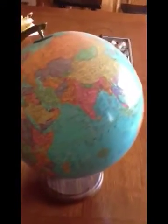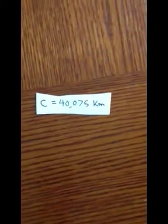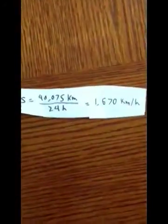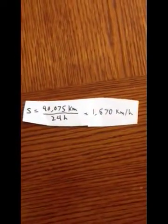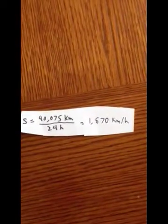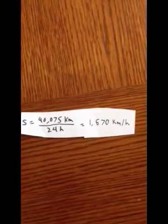Suppose you are traveling at the equator. The circumference of the equator is 40,075 kilometers and you have to travel around the equator in a one day period. So if you take 40,075 kilometers divided by 24 hours, you have to travel at the equator west at a speed of 1,670 kilometers per hour to remain at a constant time.